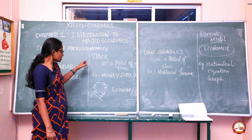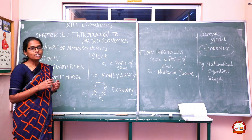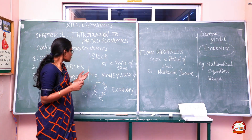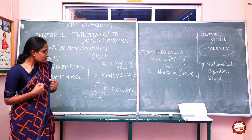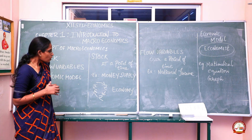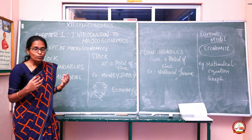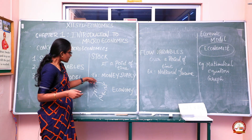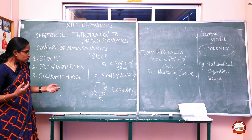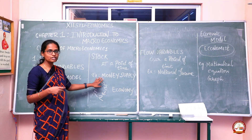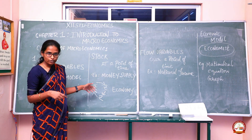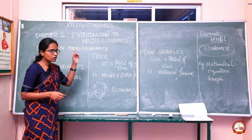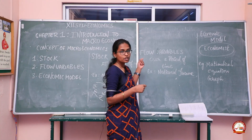The first concept is stock. In a macroeconomical sense, stock is nothing but a quantity which is measured at a particular point of time. For example, money supply — the total value of money which is circulated within our economy, within our nation. We are a country having the currency called rupee, which is circulated within our economy. That's called money supply, and it's one example of stock.